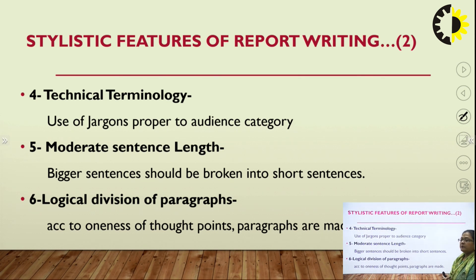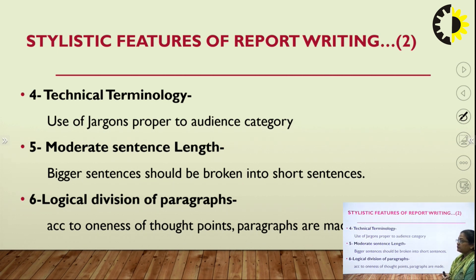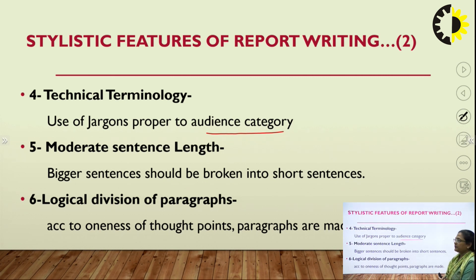Then comes technical terminology — it is also a must-have quality of technical communication that reports should have proper use of jargons. Jargons are the technical terms in that particular field. In whatever field we are making a report, we should use proper jargons, and the propriety of jargon use depends upon the category of the audience. Next is moderate sentence length. The level of complexity should be controlled and sentence length should be moderated — if we make bigger sentences, it will be more difficult to read and understand. Generally it is a golden rule that we should have a moderate level of complexity; bigger sentences should be broken into short but complete sentences.